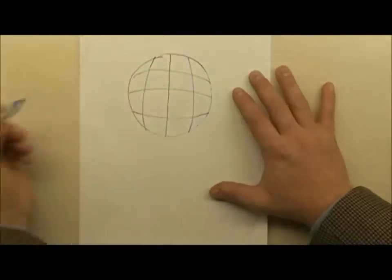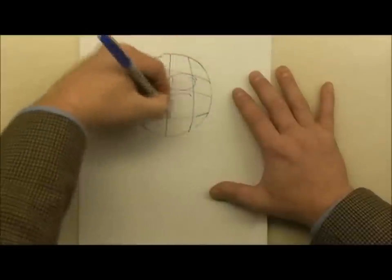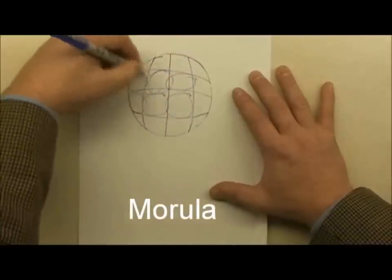After a few divisions, we're left with a big ball of cells that's referred to as a morula.